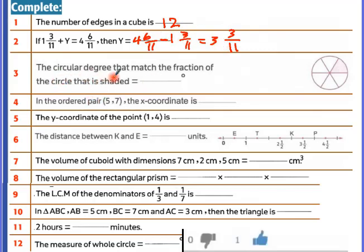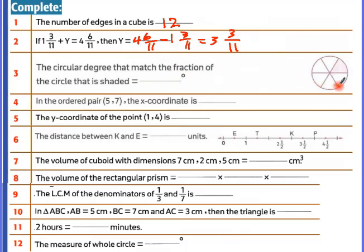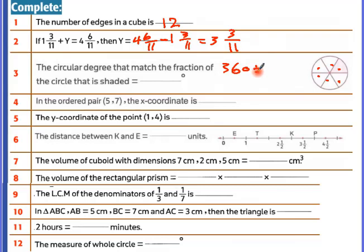The circular degree that matches the fraction: count the circle parts carefully — don't guess. Count: 1, 2, 3, 4, 5, 6 — six parts. For each one part: 360 divided by 6 equals 60 degrees.